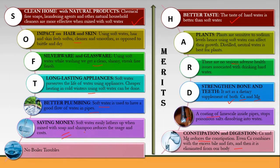Soft water can also save you money, because you use less soap and shampoo. There is also no boiler trouble with soft water. In a boiler, water is boiled and impurities are left behind; if it is hard water, those impurities create scale and sludge in the boiler. With soft water, there is no such problem.